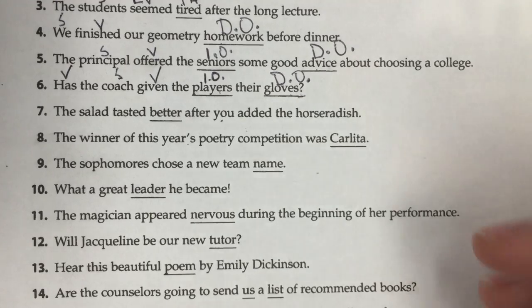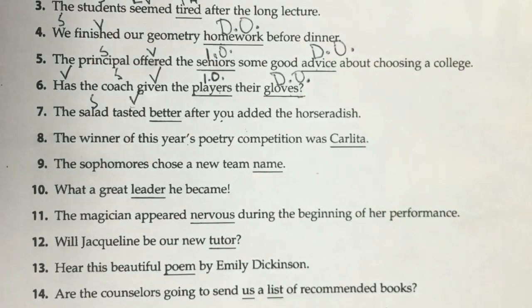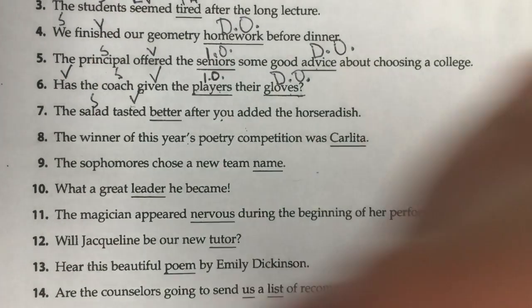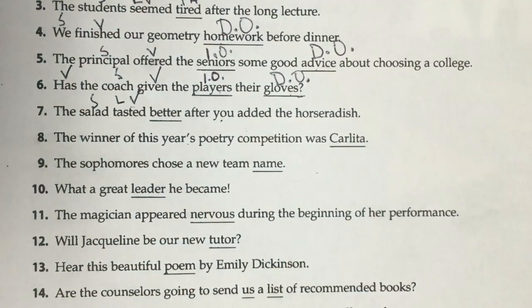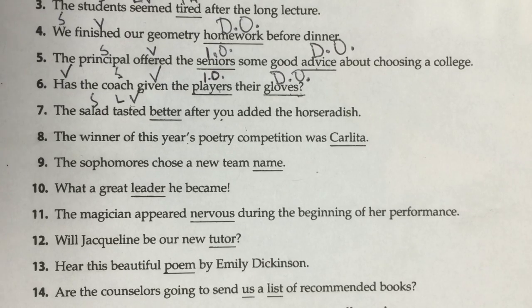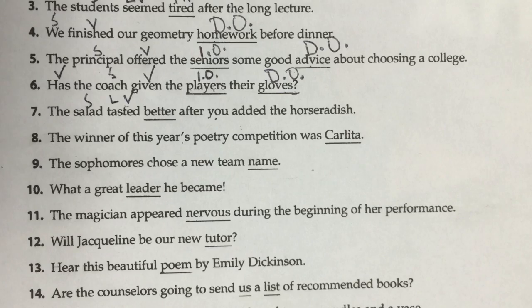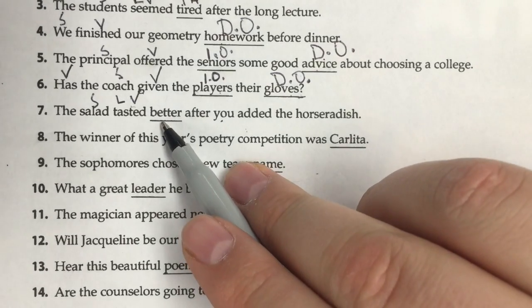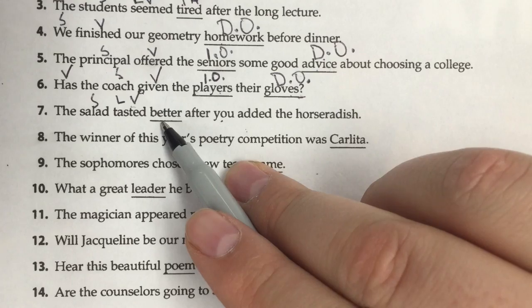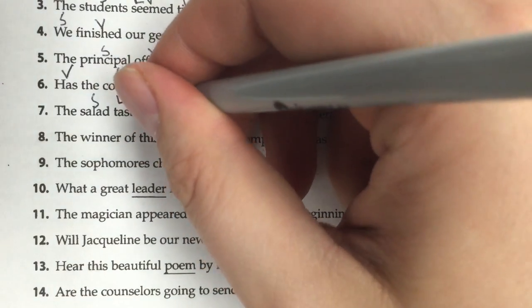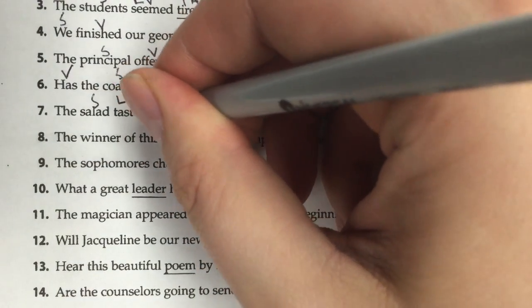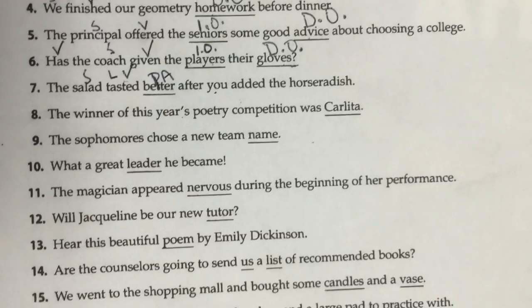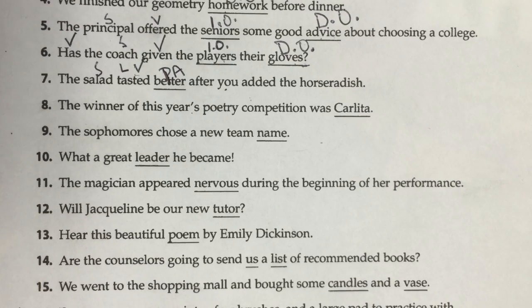Number seven: 'The salad tasted better after you added the horseradish.' Here is our subject and here is our verb. Tasted is a linking verb because I can replace it with an equal sign — the salad equals better. After a linking verb, we're looking for predicate adjectives or predicate nominatives. The word better is a describing word; it is an adjective, so this is a predicate adjective.